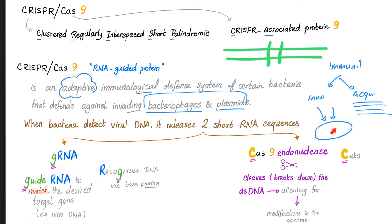When bacteria detect viral DNA — the invader — it releases two short RNA sequences. These are very important. Number one is the gRNA — the guide RNA. The second one is the Cas9 endonuclease. G is for guide. It will recognize and guide to match the desired target gene, which is the viral DNA. So here is the bacterial RNA — it will match by base pairing with the viral DNA like this.